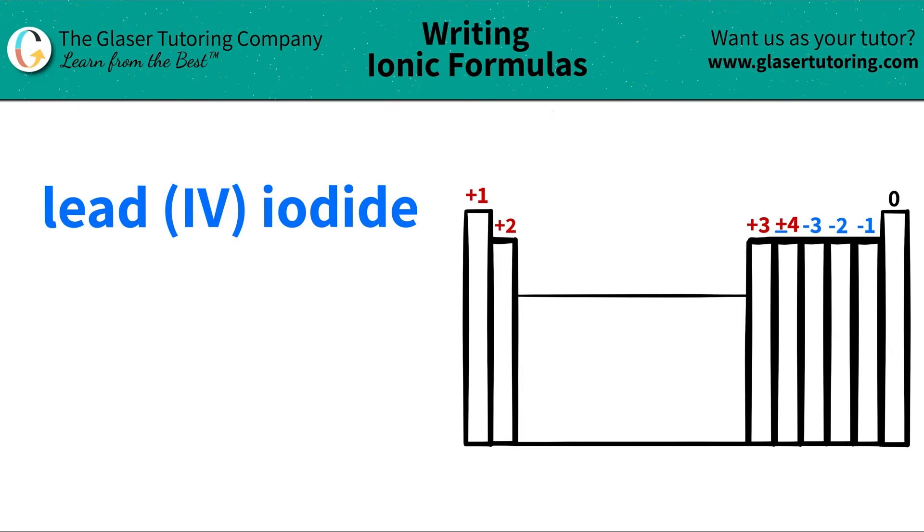Today we're going to be writing the formula for the ionic compound lead (IV) iodide. Let's see where these elements are located on the periodic table and then we'll take it from there.